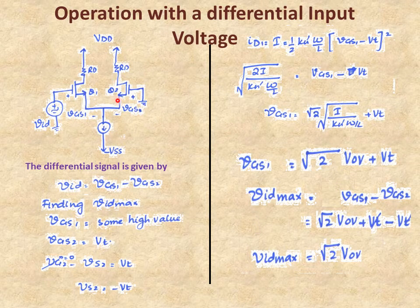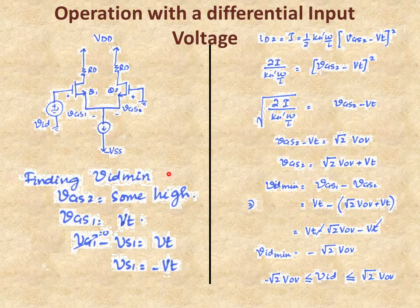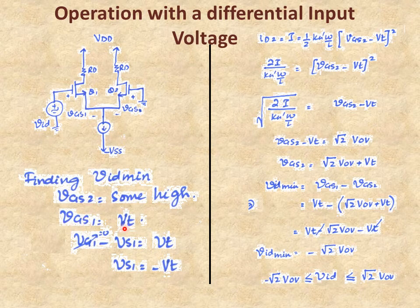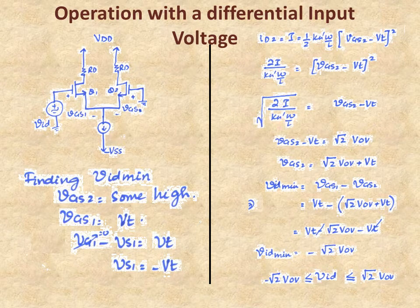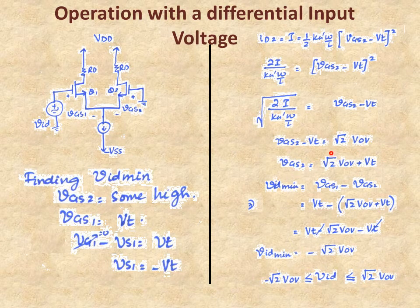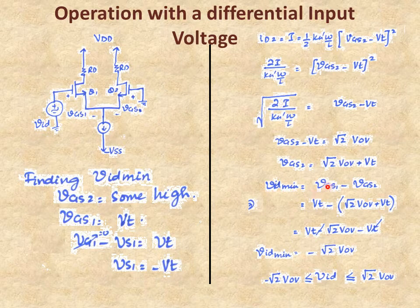For all current to switch to Q2 (Q1 off), use the reverse procedure. Set VGS1 = VT (to turn Q1 off) and assume VGS2 is at a high value so ID2 = I. From ID2 = I = half × KNW/L × (VGS2 minus VT)²: VGS2 minus VT = root(2I / KNW/L) = root(2) × VOV, so VGS2 = root(2) × VOV + VT.